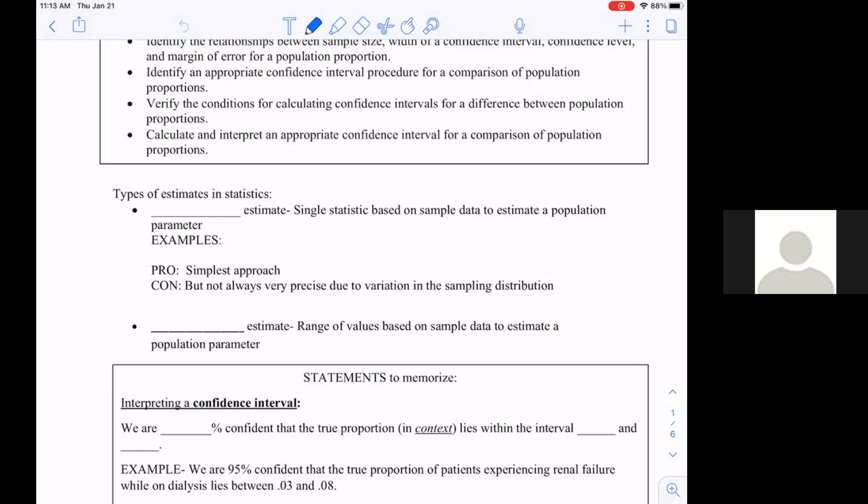That's what we're talking about today. Two types of estimates for statistics. The first one's called a point estimate. It's a single statistic based upon sample data to estimate a population parameter. A point estimate is going to be the middle of my interval.